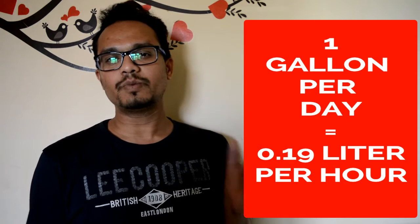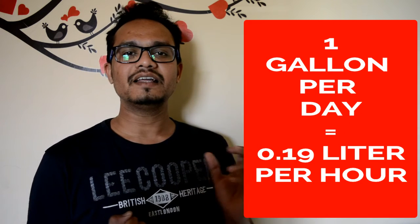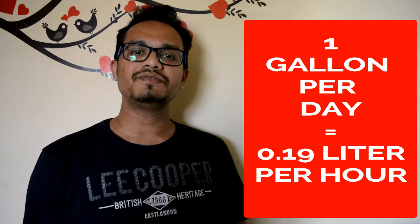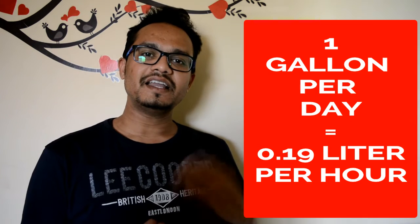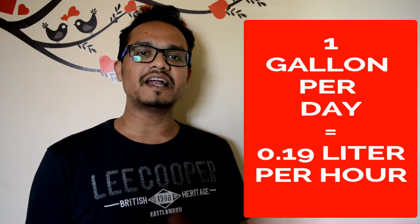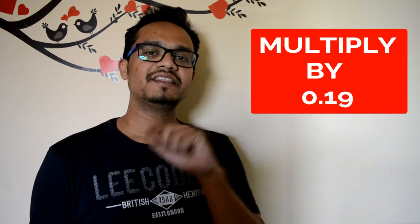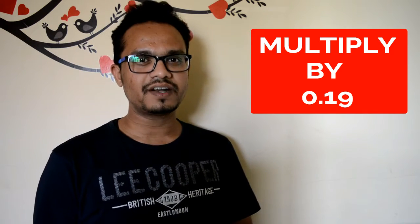For converting GPD into liters per hour, there is one simple formula. 1 GPD is equal to 0.19 liters per hour. That means if you want to convert any GPD value into liters per hour, you need to multiply it by 0.19 and you'll get your answer.